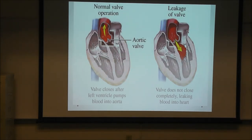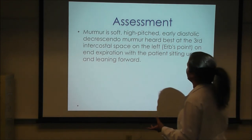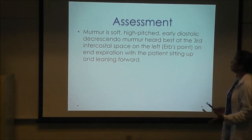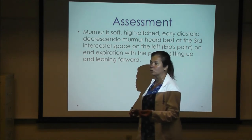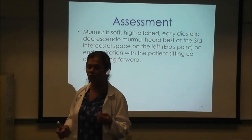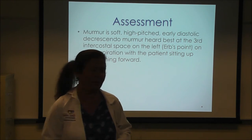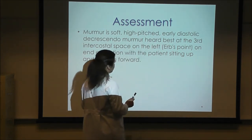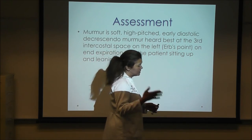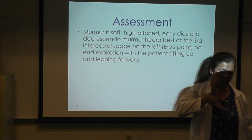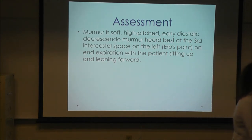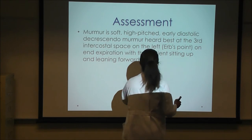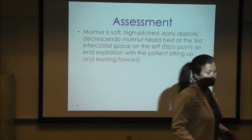The murmur quality of aortic regurgitation: soft, high-pitched, diastolic, and decrescendo in nature. The aortic valve is located in the second intercostal space, right sternal border, and tends to radiate from Erb's point into the apex. The murmur is best pronounced on expiration when the patient is sitting up and leaning forward.